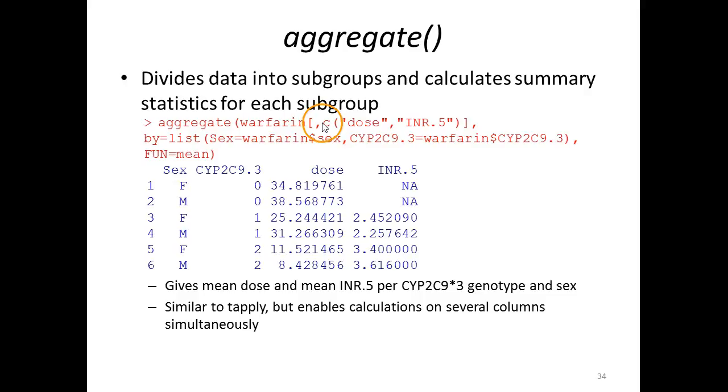We start by writing aggregate followed by a subset of the data set containing data we want to aggregate. So we select only those two columns - we ask for the warfarin data set, all rows, columns dose and INR5. So this part results in a smaller data frame containing only these two columns.